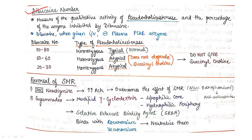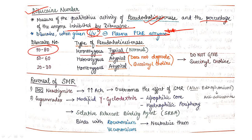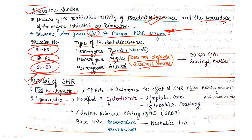The dibucaine number measures the qualitative activity of pseudocholinesterase — specifically, the percentage of enzyme inhibited by dibucaine. If the dibucaine number is 72–80, the patient is homozygous typical (normal). If 50–60, the patient is homozygous heterozygous atypical — meaning they cannot degrade succinylcholine. If 20–30, the patient is homozygous atypical. For reversal of SMR, the drug of choice is neostigmine; sugammadex (a modified gamma-cyclodextrin) can also be used.